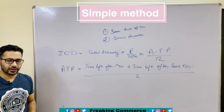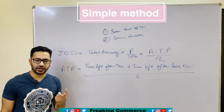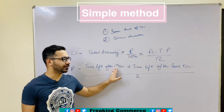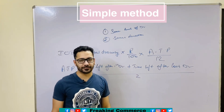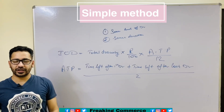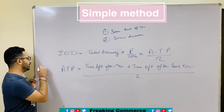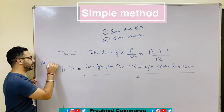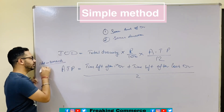This means when you withdraw your first installment or first amount, what will be the time left after that first drawing, and the time left after the last drawing. While calculating ATP, the duration is very important. For example, if we are calculating for the whole year, then your duration is from 1st April to 31st March.